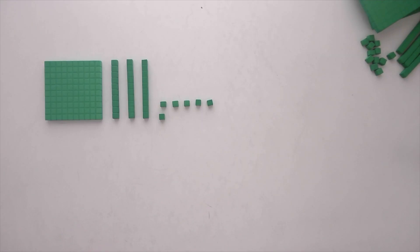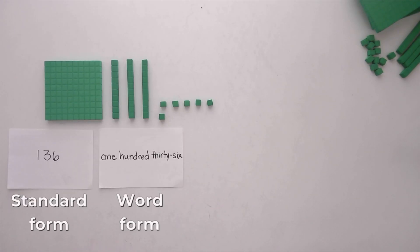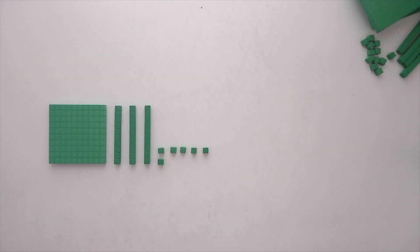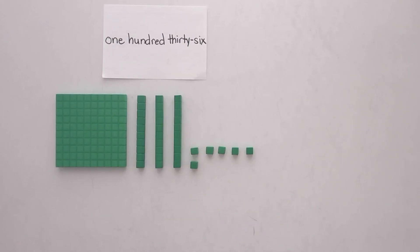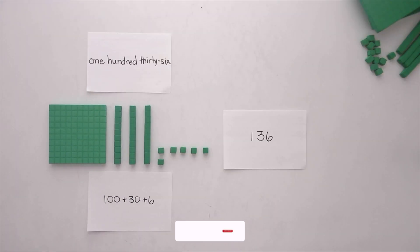Once we've built the number, we can connect it to the different ways it can be written: standard form, word form, and expanded form. Matching the blocks to each form helps students make the connection between what they see, what they read, and what they write. It reinforces the idea that all three are different ways to describe the same quantity. Seeing and using multiple representations helps build students' conceptual understanding of numbers and their values.